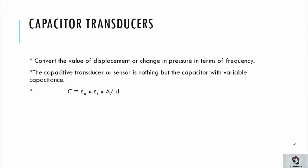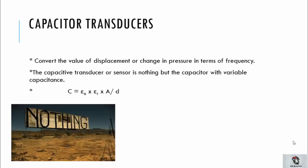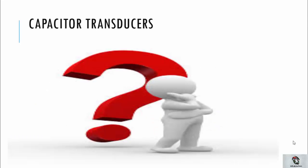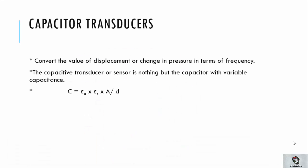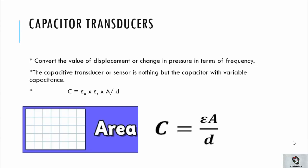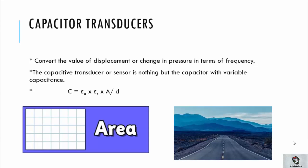We can classify a capacitor transducer as nothing but a variable capacitor. Your next question would be how — and in the upcoming slides you will know why I am calling it a variable capacitor. Before that, you must be familiar with the formula of capacitance: C = ε₀εᵣA/d, where A refers to the cross-section of the plate, d refers to the distance between the plates, and εᵣ is the relative dielectric constant.